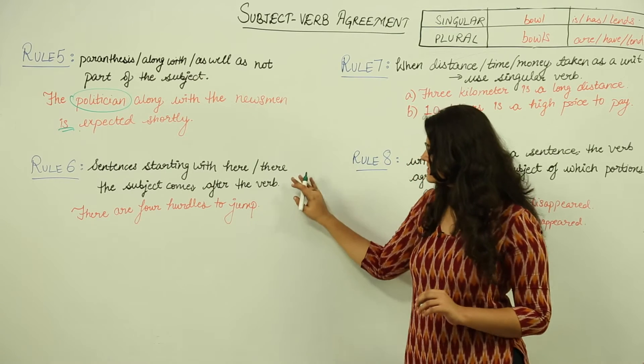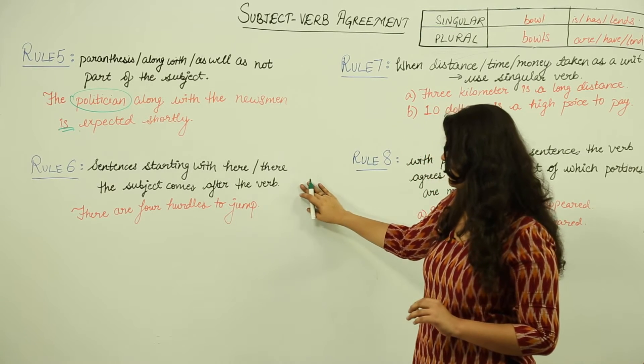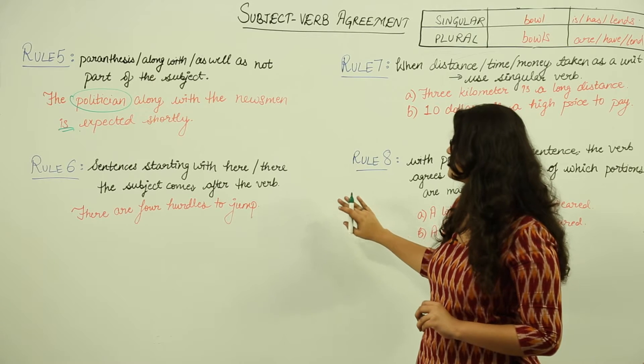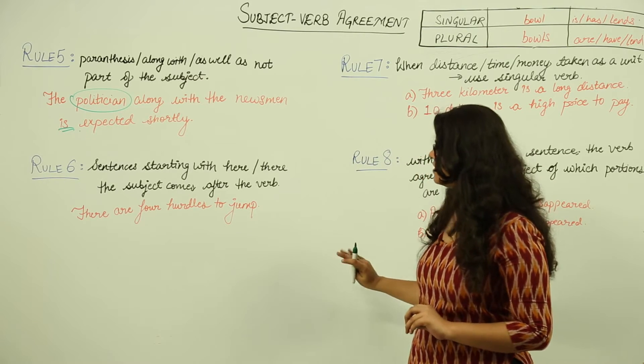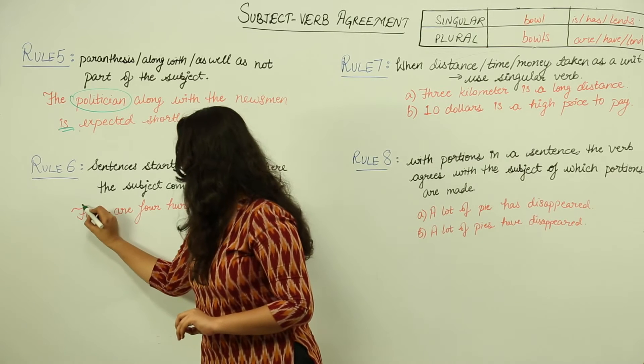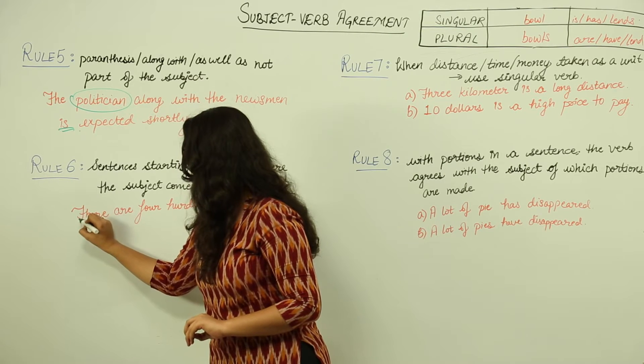Next, sentences starting with here, there, the subject comes after the verb. So there are four hurdles to jump. Here the sentence is starting with there as we can see.